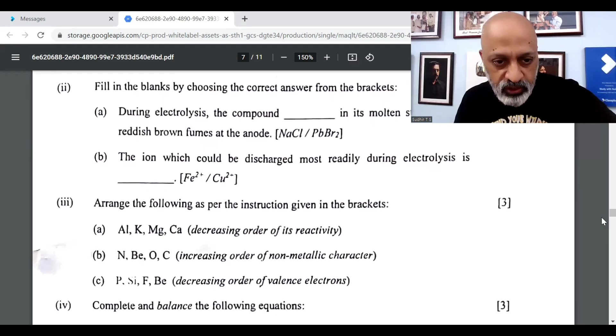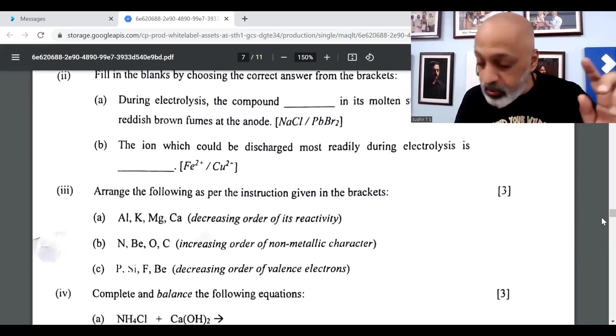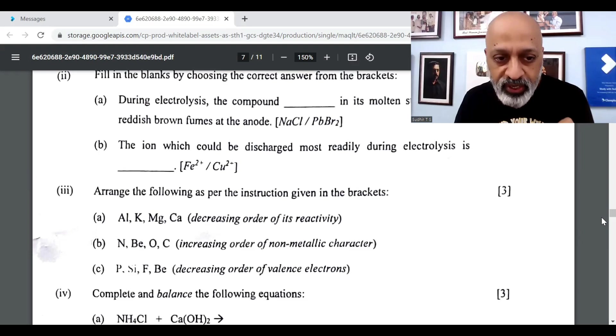Then we have to arrange the following in decreasing order of reactivity: K, C, A, magnesium, aluminium. The second one is B, E, C, O, and N.